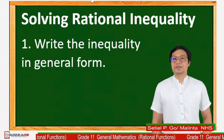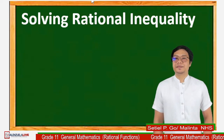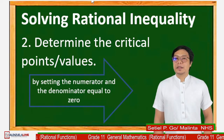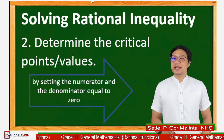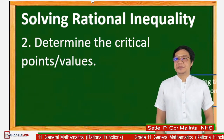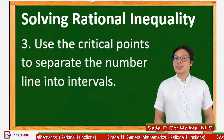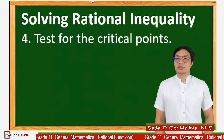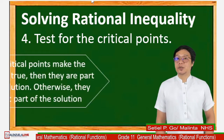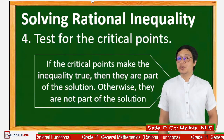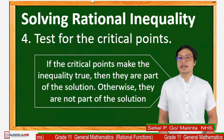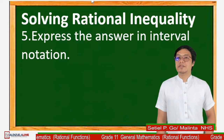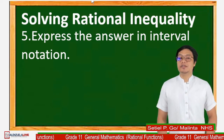Let us now deal with how to solve rational inequality. We have the following steps: number 1, write the inequality in general form; number 2, determine the critical points or critical values by setting the numerator and the denominator equal to 0; number 3, use the critical points to separate the number line into intervals; number 4, test the critical points — if they make the inequality true, they are part of the solution, otherwise they are not; number 5, express the answers in interval notation.